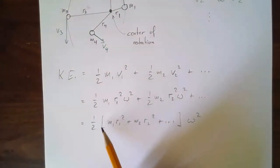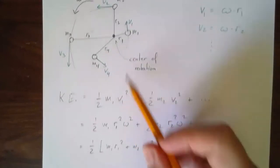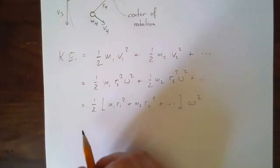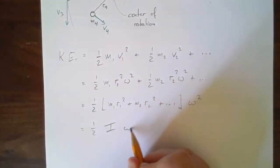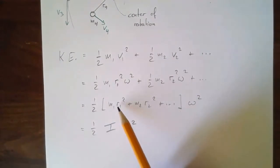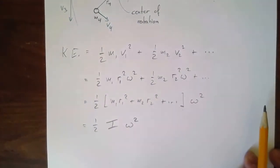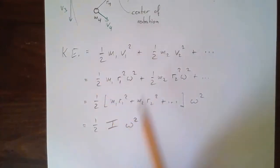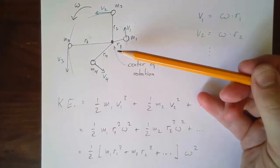If you look carefully, you recognize the expression in the middle — each mass times its radius squared. That is nothing but the moment of inertia of the system. mr² is the moment of inertia of one point mass; just add them to get the total moment of inertia. So what we've shown is that the kinetic energy is ½Iω² for this system, and this generalizes.